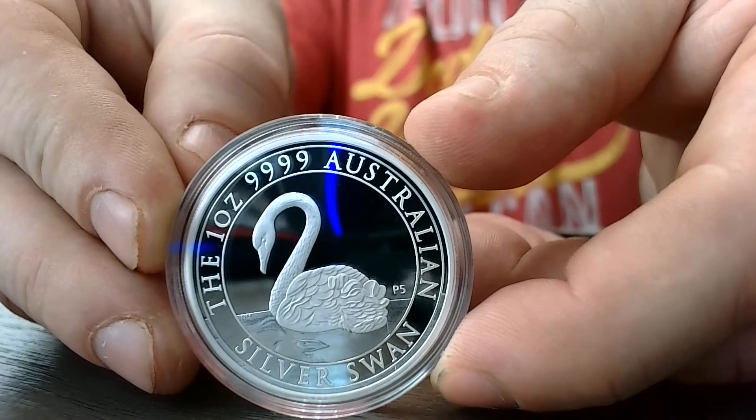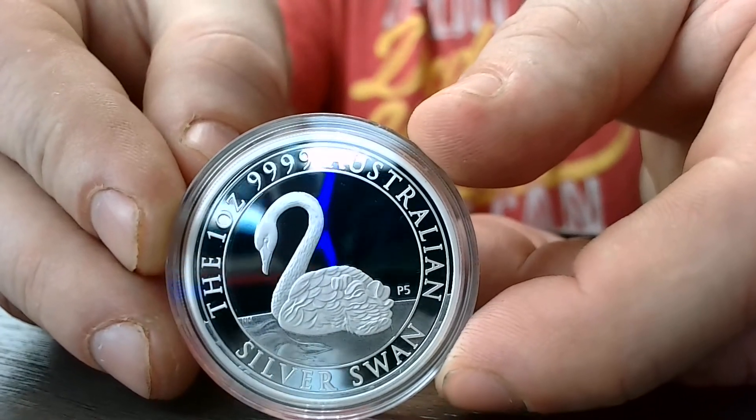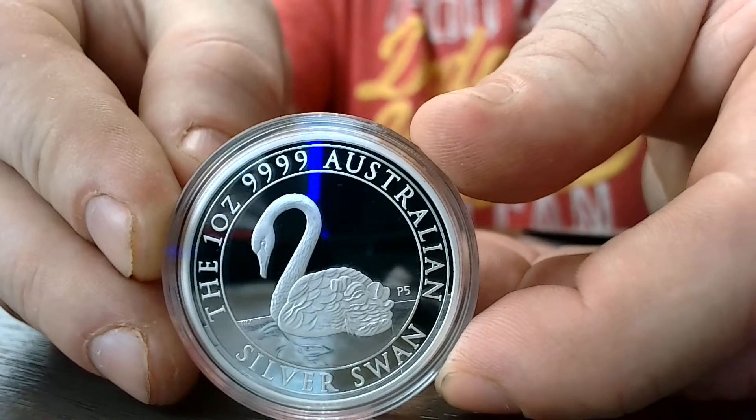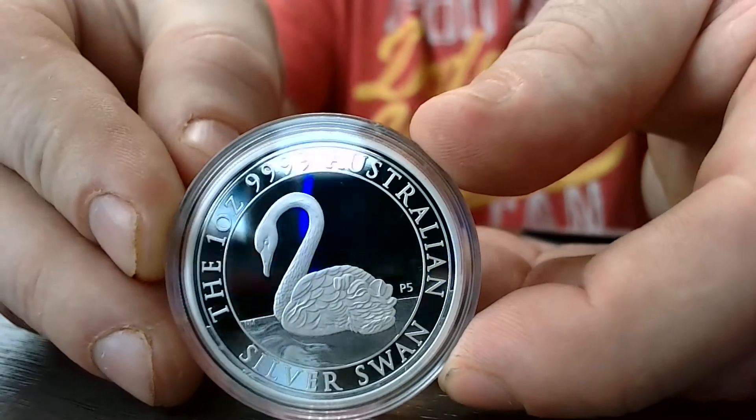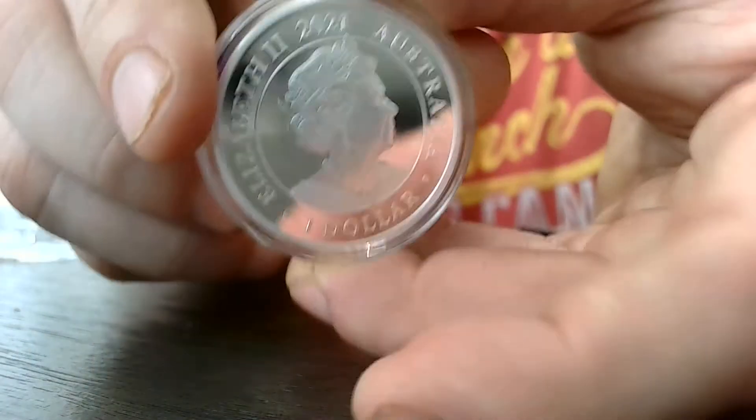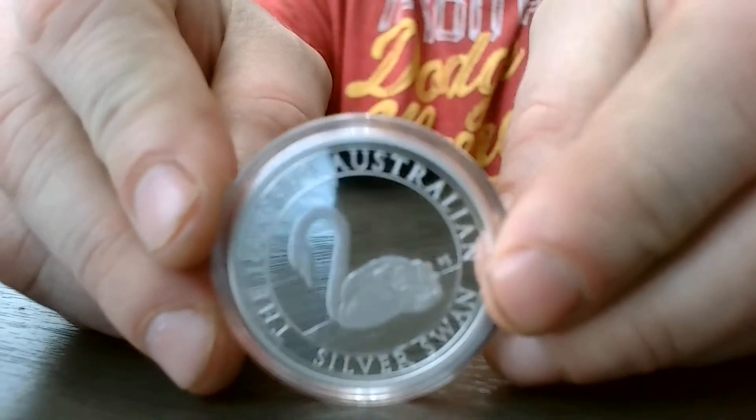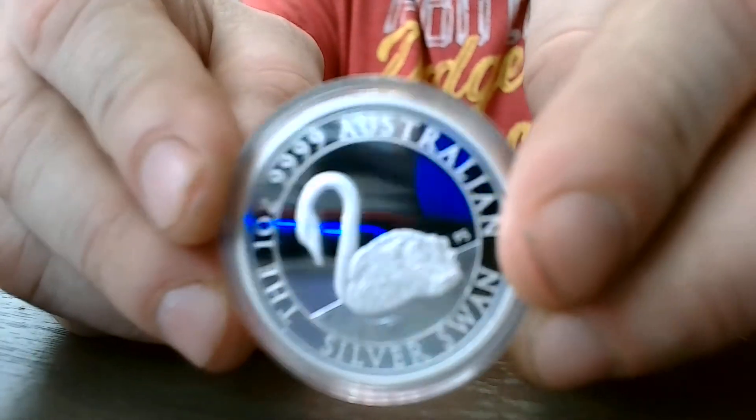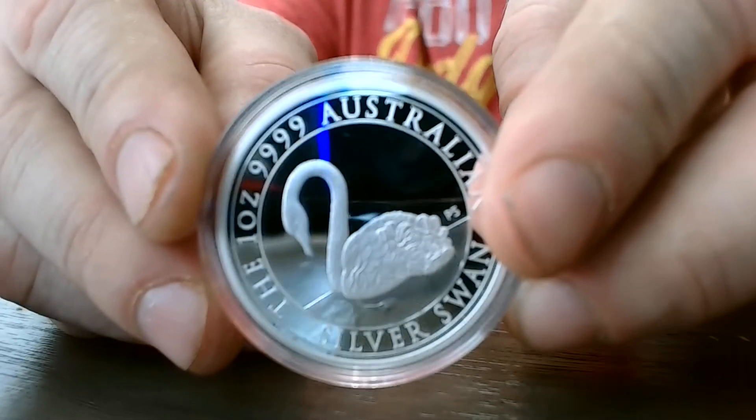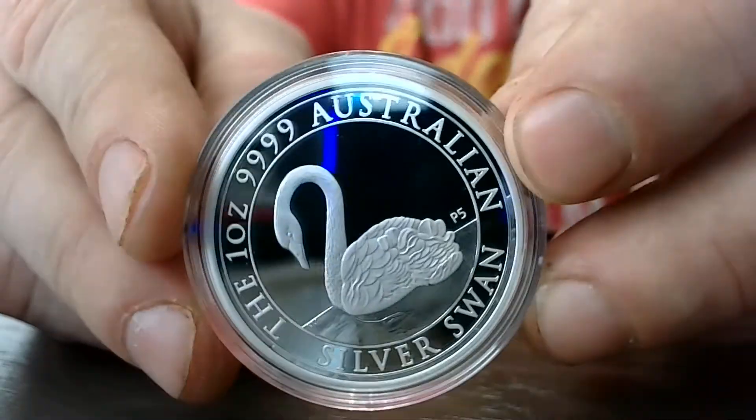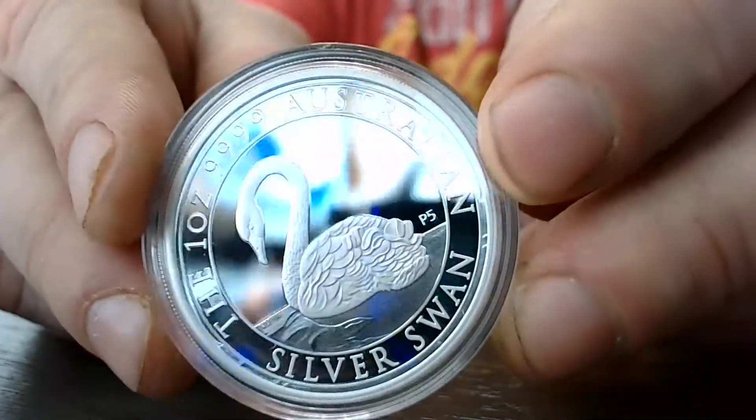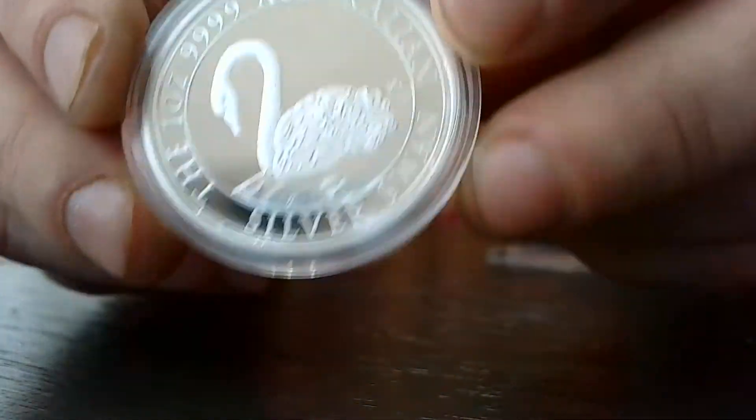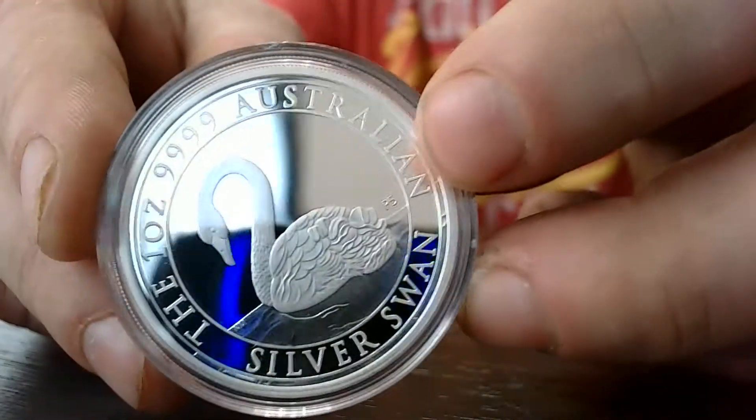Look at how beautiful that is. That is beautiful. And I actually bought the BU version too, and I bought this one first. This is the first Swan coin I have, and it is beautiful. I know some people liked it so much they got it in gold. Yeah, I didn't get it in gold, but I got it in silver, and I think this coin is really nice. Wow, this is beautiful. There's no telling, that is definitely proof.